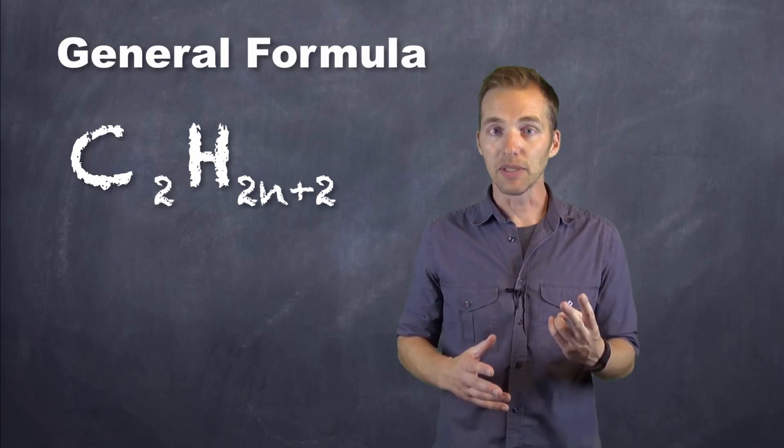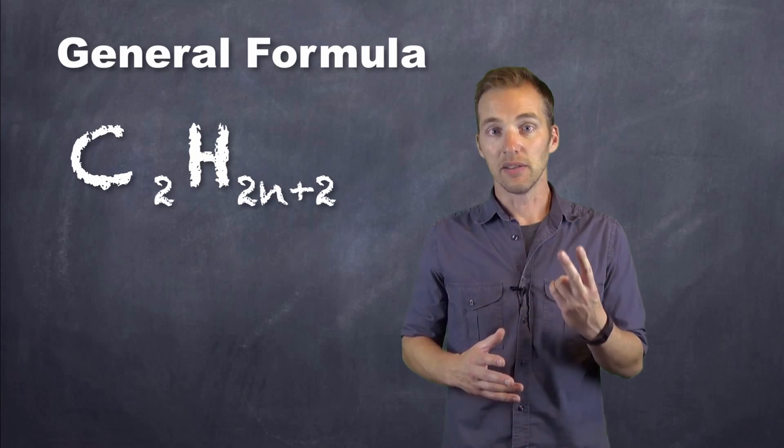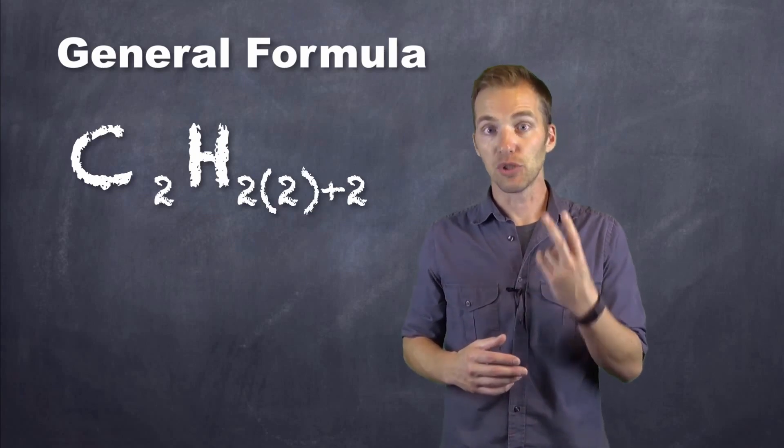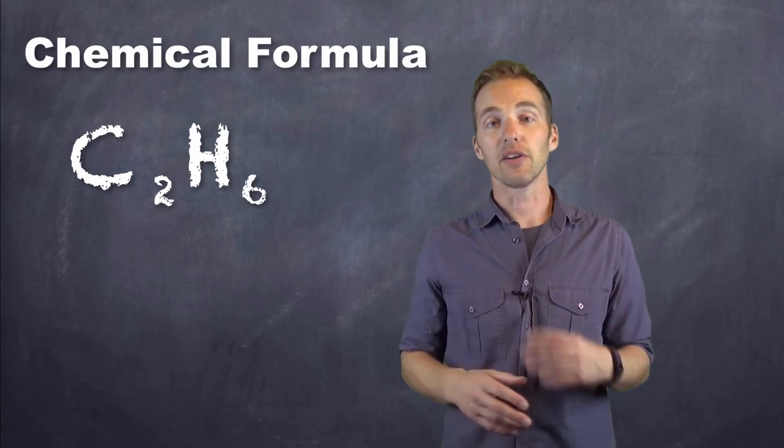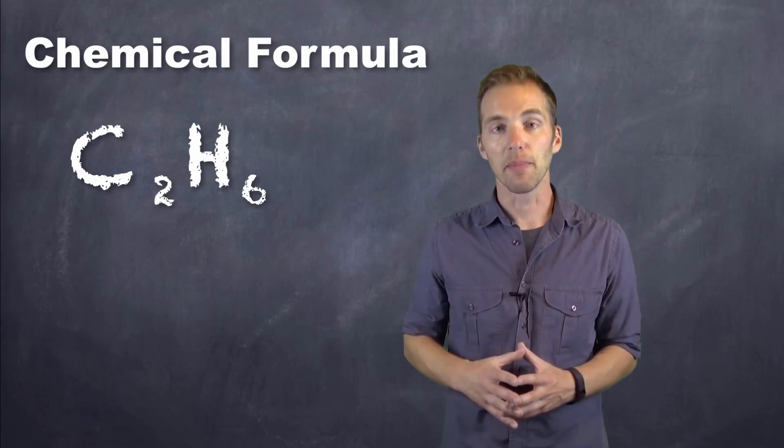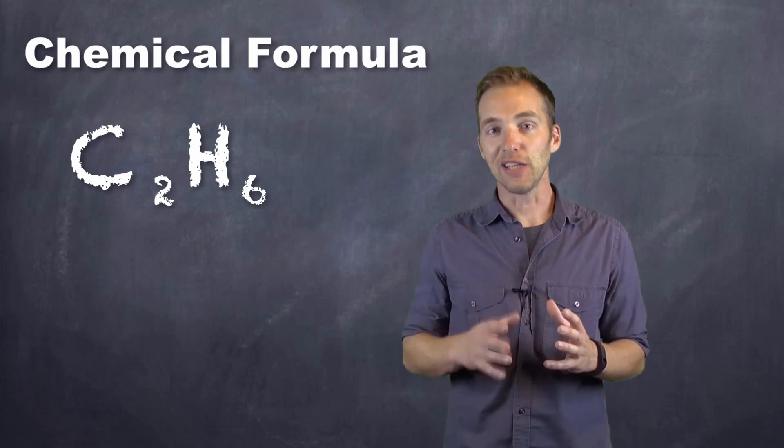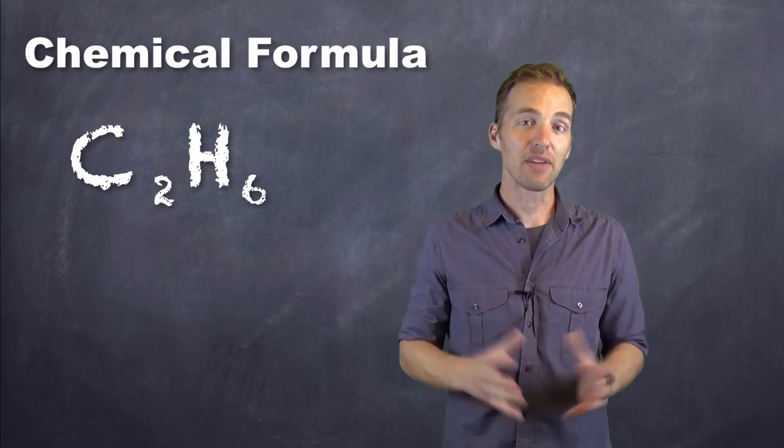Ethane has two carbons, so n would represent two. The formula would be C2. H2 times 2 plus 2 would give us six. So we could draw it out and see that there are two carbons bound to six hydrogens, three for each carbon. Or we can take a look at the CnH2n plus 2 to derive the actual formula without having to draw the structure.